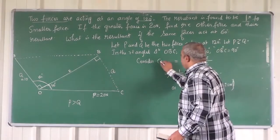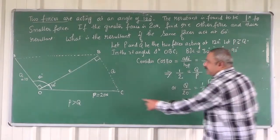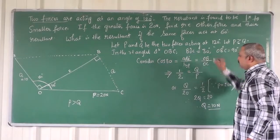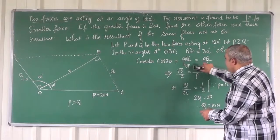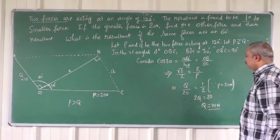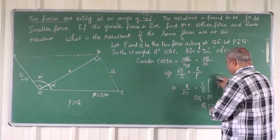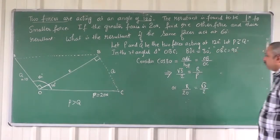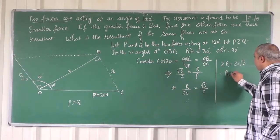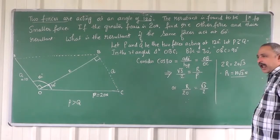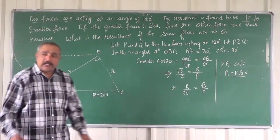Consider cos 30 in the same triangle OBC. Cos theta equals adjacent side over hypotenuse. The adjacent side is OB, which is R, and the hypotenuse OC is P equals 20. So cos 30 equals R over 20, meaning root 3 over 2 equals R over 20. Therefore 2R equals 20 root 3, so R equals 10 root 3. We have found the resultant using the cos 30 ratio method.